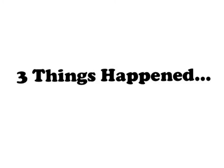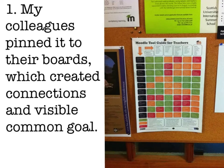After I had created this matrix, three things really happened. My colleagues around the institution at EIT began to pin this to their boards. What was really interesting about that was that not only did it create a connection between me and them, but it also created connections between them — they could see who was actively working on their blended and online learning. And seeing this thing dotted around the institution, with the number of instances increasing, made it clear that the institution was working towards a visible common goal.